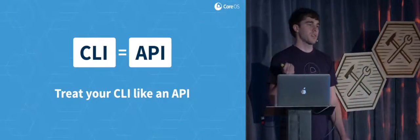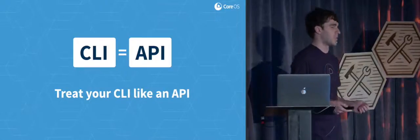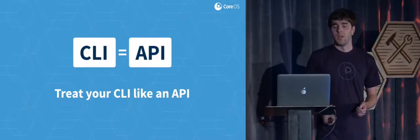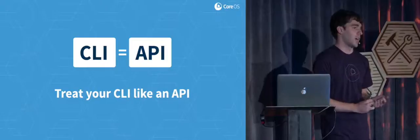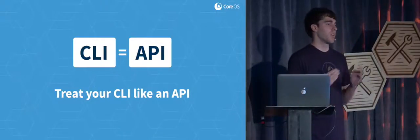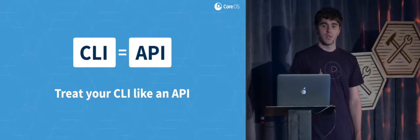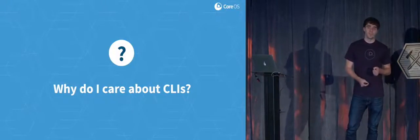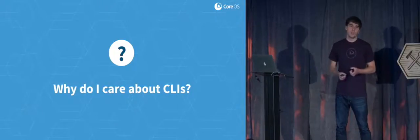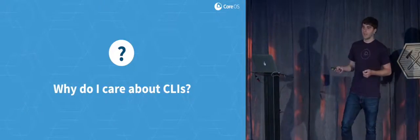CoreOS has one interesting property: we do automatic updates of the OS, just like your browser updates — you get new features and security fixes. We do the same thing for the server operating system. This shapes the way we develop our CLIs. If we're not being forwards and backwards compatible at the same time, this process doesn't work and we're going to cause pain for our customers. So what we do is treat our CLIs like APIs, with all the great things that those APIs have.